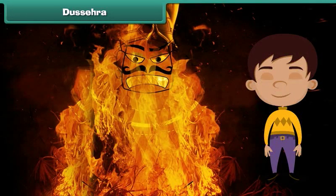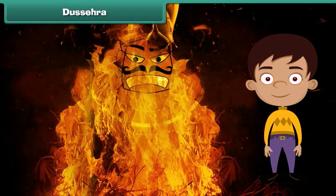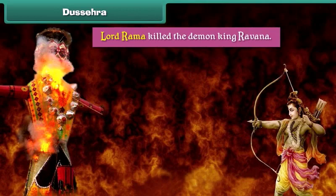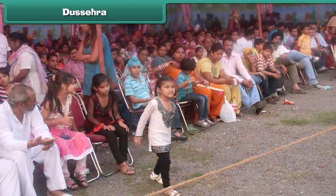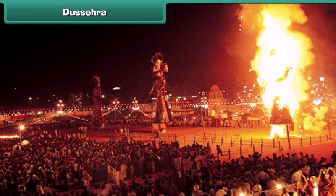Dussehra is another Hindu festival that marks the victory of good over evil. It is believed that on this day, Lord Ram killed the demon king Ravan. People gather in a large field in the evening and burn effigies of Ravan, his brother Kumbhakaran, and his son Meghanath.